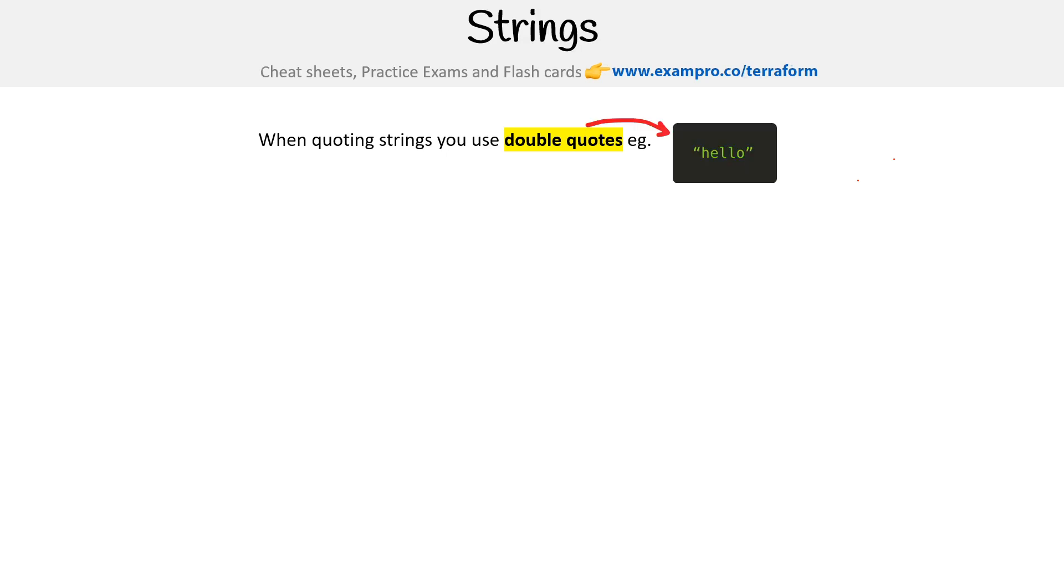At one point, Terraform I believe supported single quotes, I think it only supports double quotes now. And honestly, you generally want to just use double quotes because double quotes always support escape sequences. This is pretty much standard across all programming languages.